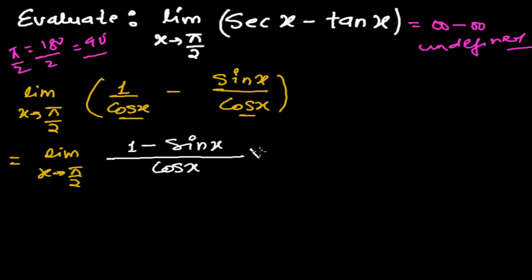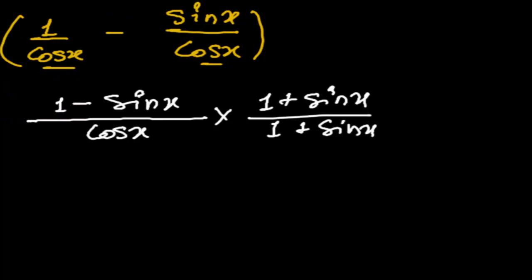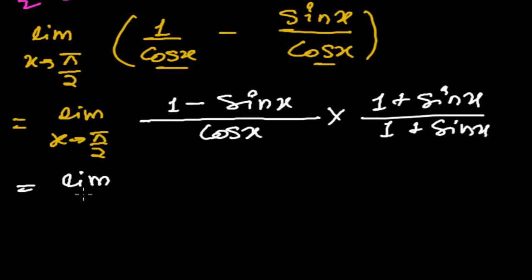Yeah, let's rationalize it by the numerator. We can rationalize it by numerator. So 1 plus sin x, 1 plus sin x. And whenever we rationalize, we change the sign. So I change here sign. So again, limit x when tends to π/2. Now see here in this problem exactly...